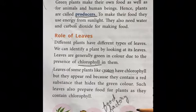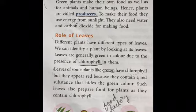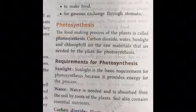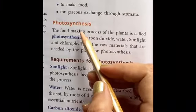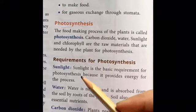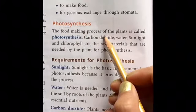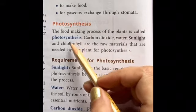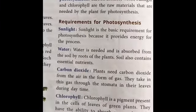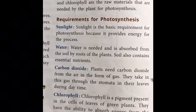The green leaves act like a kitchen or food factory — the place where food is made for the plant. The process used for making food is photosynthesis, which you might have learned earlier. Photosynthesis is a food-making process for plants. Now let's discuss what different things they need in the process of photosynthesis.